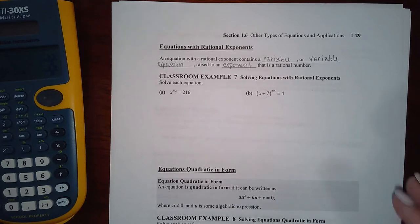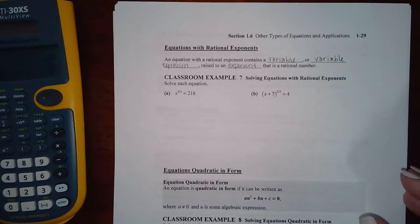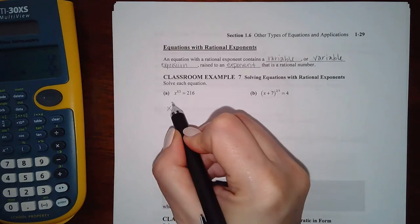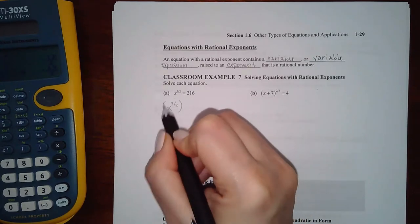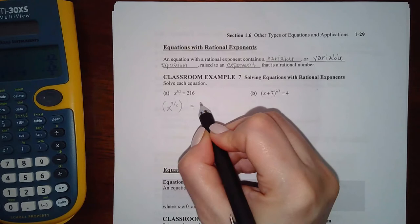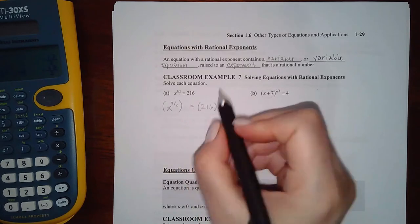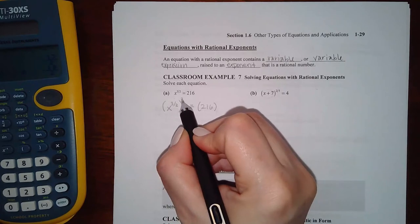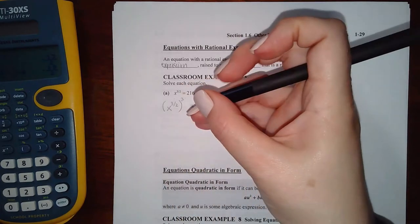Okay, so here we have x to the three halves. So what I'm going to do is I'm going to take this side and this side and raise it to the reciprocal flip over, two over three.